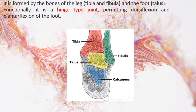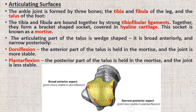The ankle joint, or talocrural joint, is a synovial joint located in the lower limb, formed by the tibia and fibula of the leg and the talus of the foot. Functionally it is a hinge-type joint, permitting dorsiflexion and plantar flexion. The tibia and fibula are bound together by strong tibiofibular ligaments and together form a bracket-shaped socket known as a mortise, covered in hyaline cartilage. The body of the talus fits snugly into the mortise. The talus is wedge-shaped — broad anteriorly and narrow posteriorly — making the joint more stable in dorsiflexion and less stable in plantarflexion.